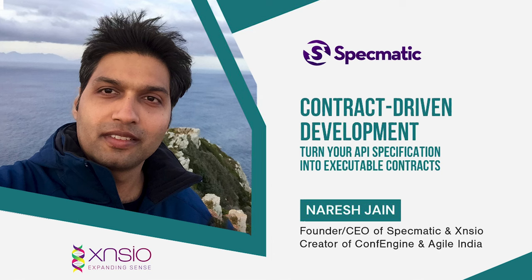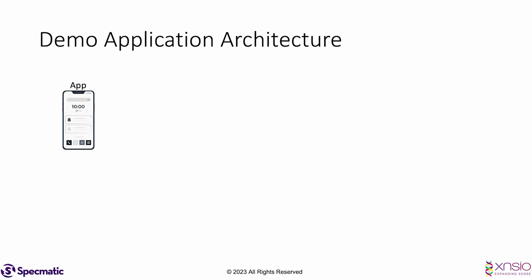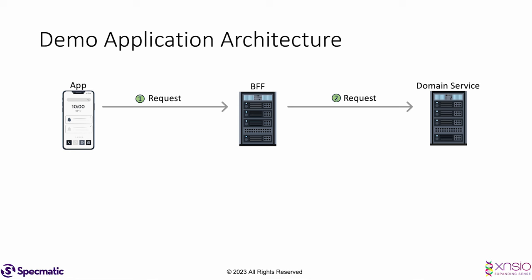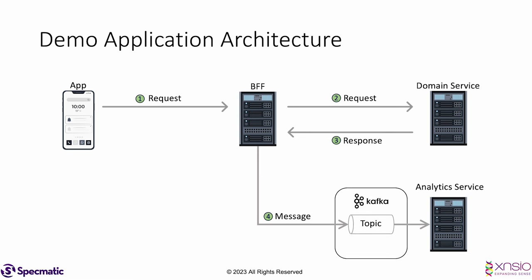Welcome to this demo of contract-driven development, where I'm going to use Specmatic, an open source tool, to turn your API specification into an executable contract. We have an app which sends a request to a BFF — a backend for frontend — which in turn sends a request to a domain service. You could have one or many domain services. Once the domain service responds, the BFF logs the message onto a Kafka topic, allowing an analytics server to pick it up. The BFF then responds to the application.